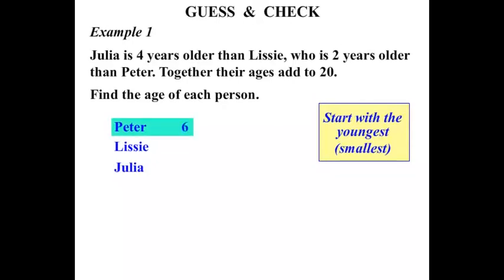Let's guess for Peter's age. What about 6? Now Lissy, through the information we read, is 2 years older than Peter. So if Peter is 6 then Lissy would be 8. Julia is 4 years older than Lissy, so Julia must be 12 years old.